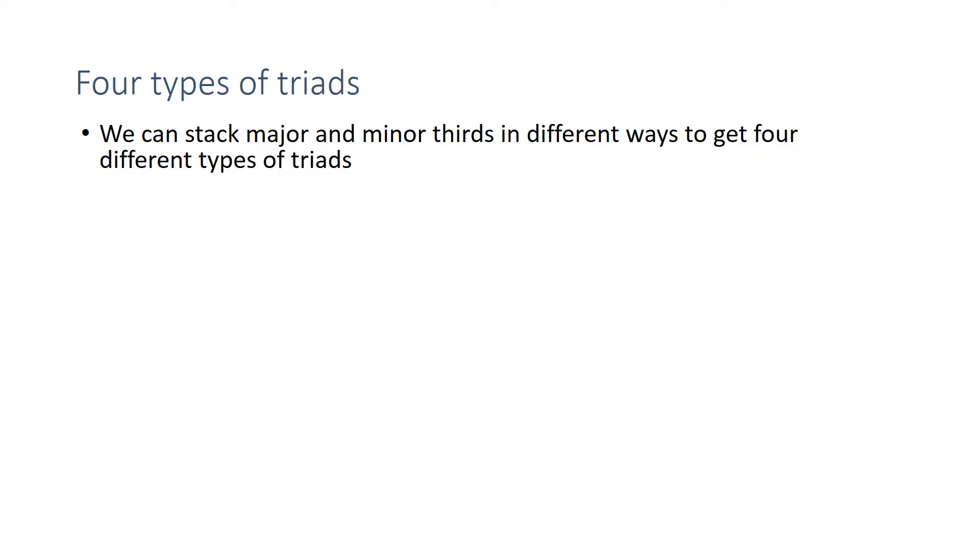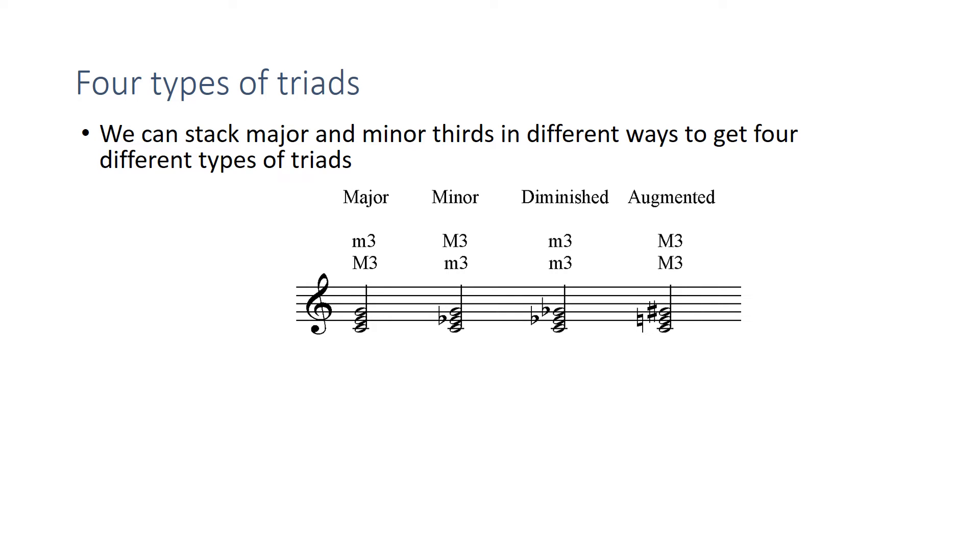So triads are made by stacking major and minor thirds on top of each other, and we can do this in four ways. So there's four different possible types of triads. And here they are: major triads, minor triads, diminished triads, and augmented triads. And as you can see, they have different ways of stacking major and minor thirds.